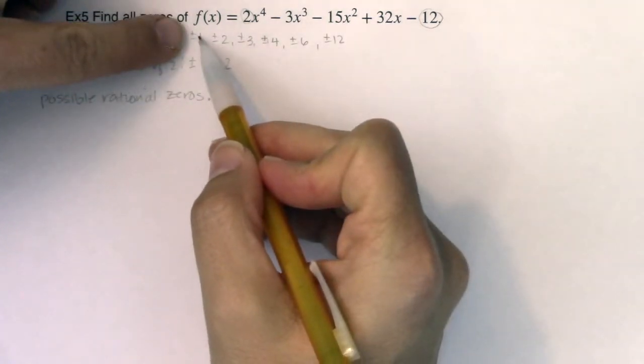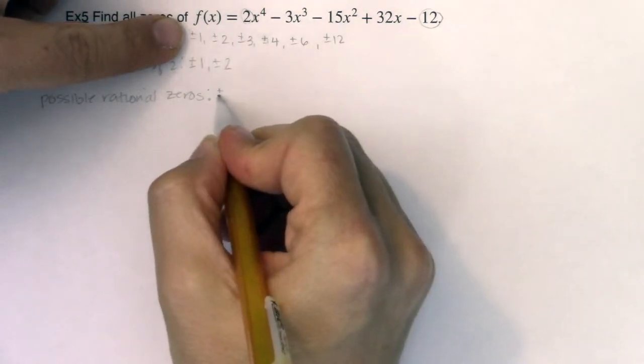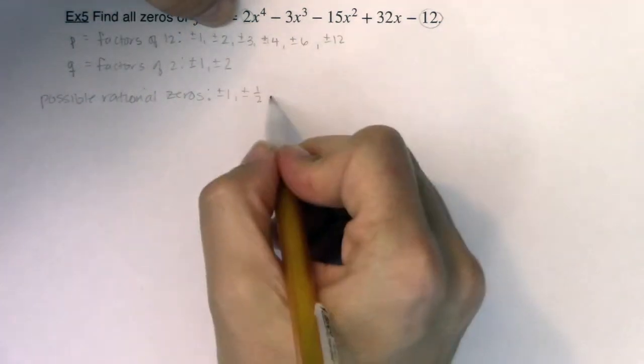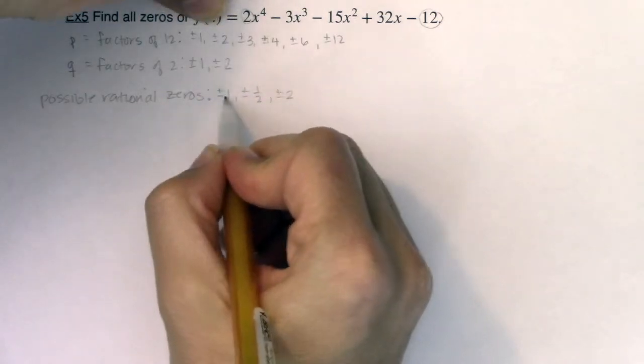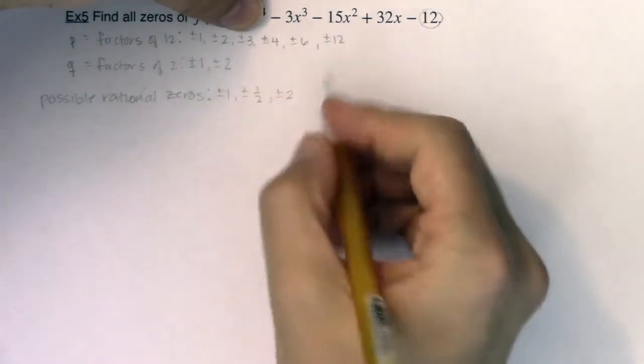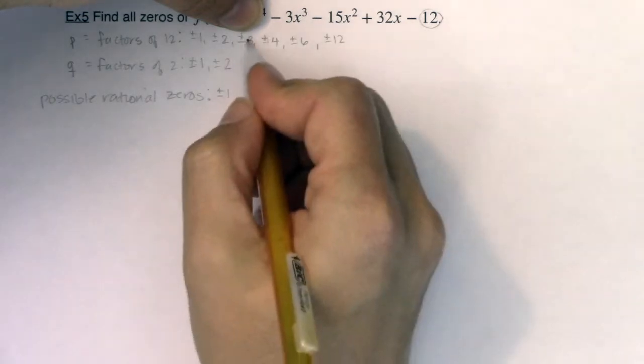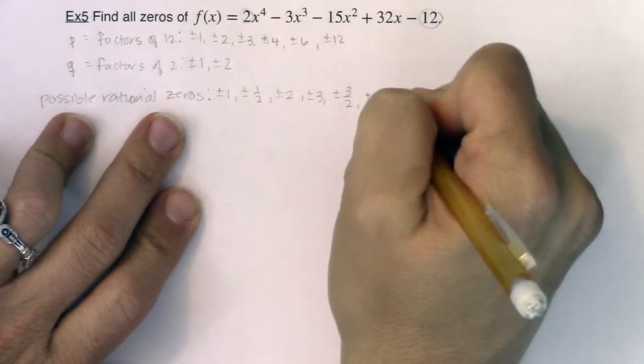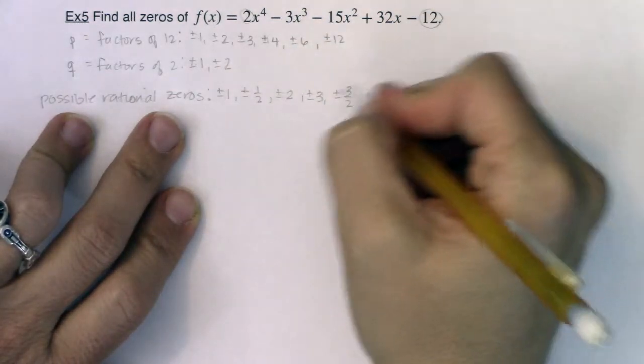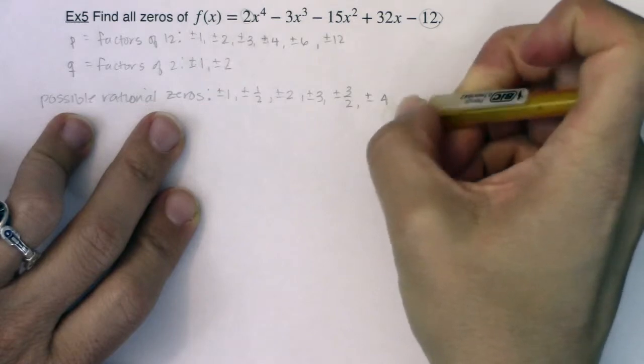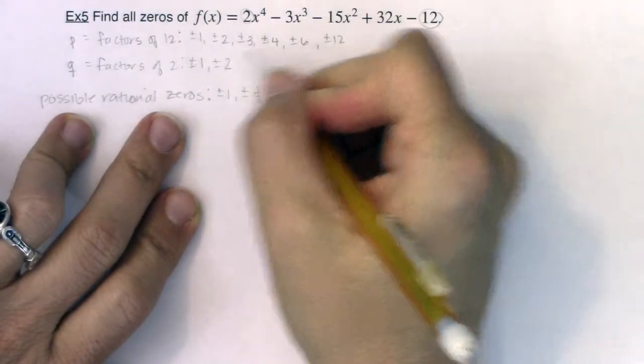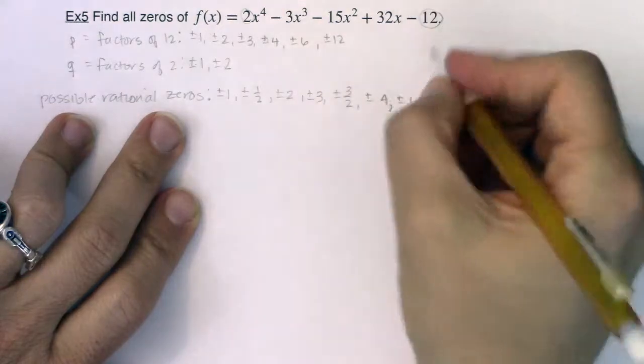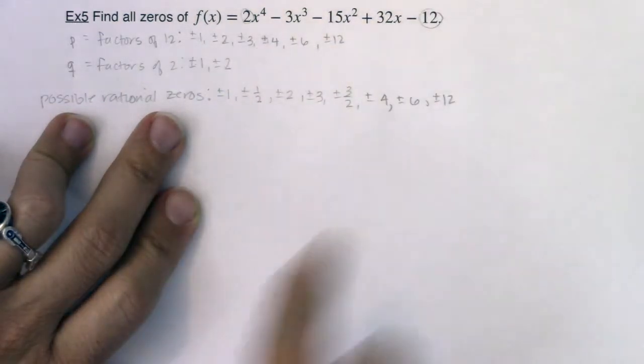We take every P and divide it by Q. So 1 over 1 is 1, 1 over 2 is 1 half. Next P is 2, 2 over 1 is 2, 2 over 2 is 1 which I already have. 3 over 1 is 3, 3 over 2 is 3 halves. 4 over 1 is 4, 4 over 2 is 2 already in my list. 6 over 1 is 6, 6 over 2 is 3 already have it. 12 over 1 is plus or minus 12, 12 over 2 is 6, already have it.